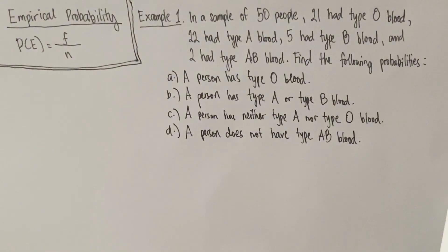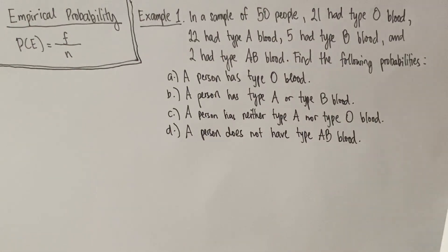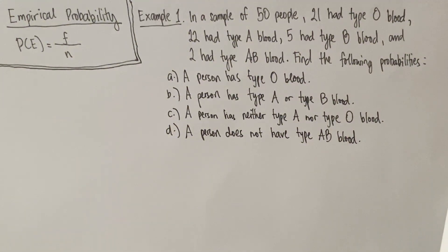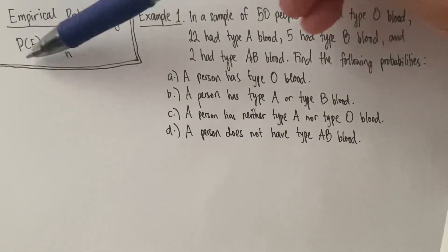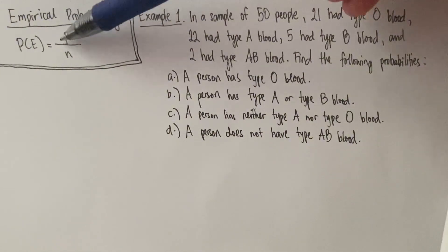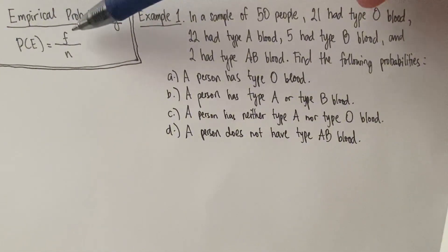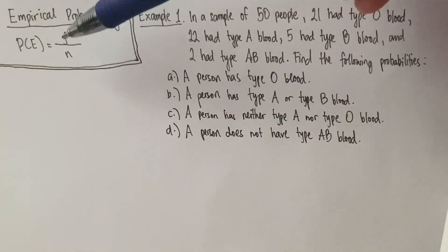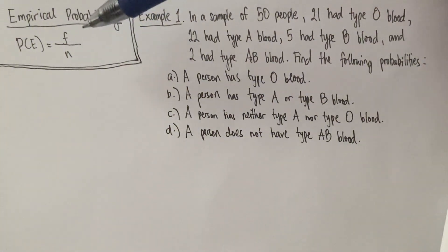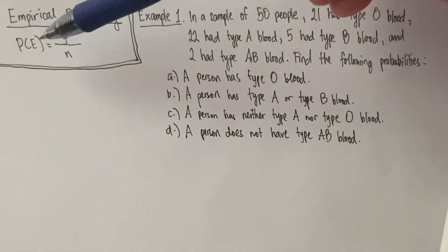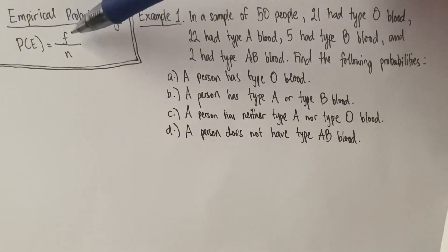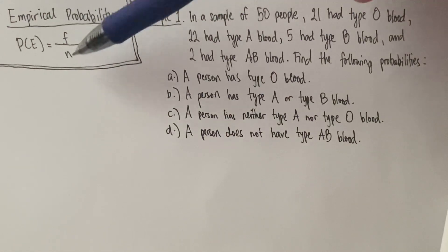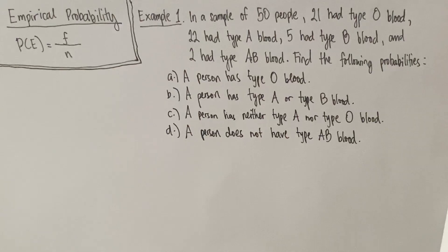For this video we're going to talk very quickly about empirical probability. Empirical probability uses a frequentist approach wherein the probability of a certain event is equal to the frequency — how many times that event has already happened in the past or in previous experiments — divided by the total number of trials, or the total number of frequencies in the whole distribution.